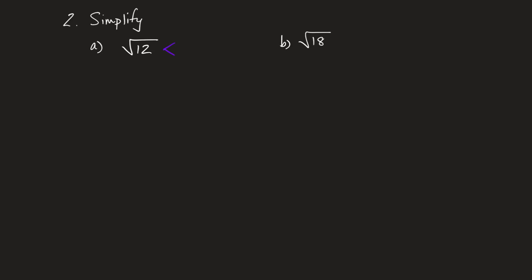I'm going to take my 12 and factor it. Two numbers that multiply to give 12: 4 and 3. Now I look at those branches. 3 is a prime number, so that branch can't go any further. And 4 is a perfect square — when I'm calculating square roots, I love perfect squares, because I can calculate the square root of a perfect square. The square root of 4 is 2. The 3? I can't take the square root of it, so I leave that operation in.